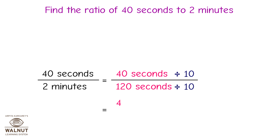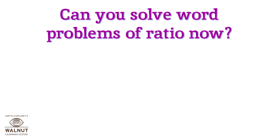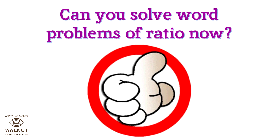We divide the numerator and denominator by 10 and we get 4 upon 12. Then we divide the numerator and denominator by 4 and we get 1 upon 3. Can we divide the fraction further? Of course not — so that's our final answer. The ratio of 40 seconds to 2 minutes is 1 is to 3. Can you solve word problems of ratio now? Yes.